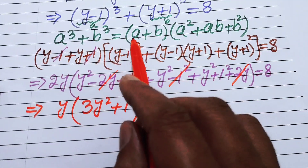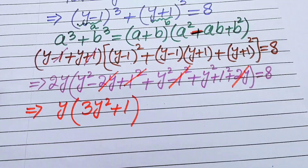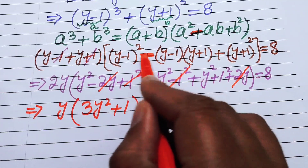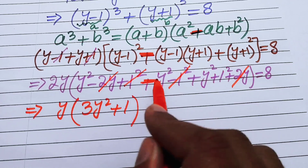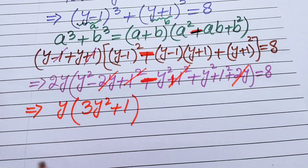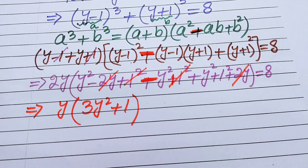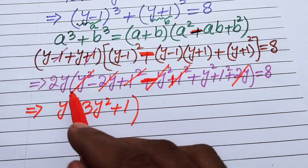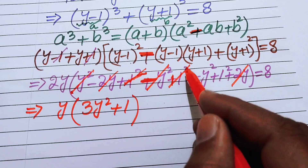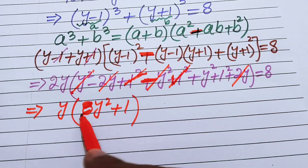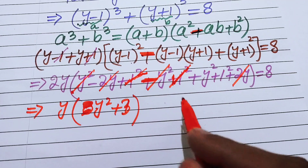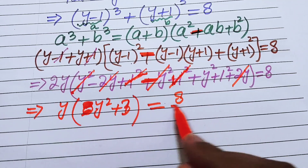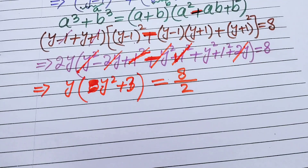With the corrected sign, the middle term −(y−1)(y+1) = −(y²−1) = −y²+1. So the bracket becomes y²+(−y²)+y² = y², and the constant terms give +1. We then have 2y(y²+3·1) = 8, and dividing both sides by 2 gives y(y²+3) = 4.